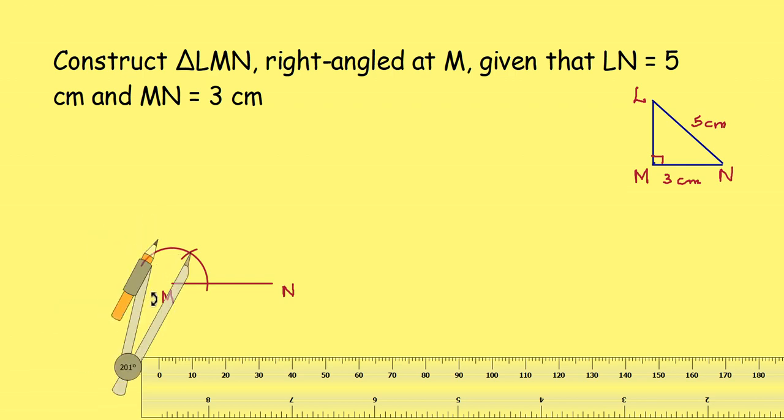Now, with center at each intersection point, draw arcs with the same radius. These arcs cut each other. Join M to this intersection. We get a perpendicular.